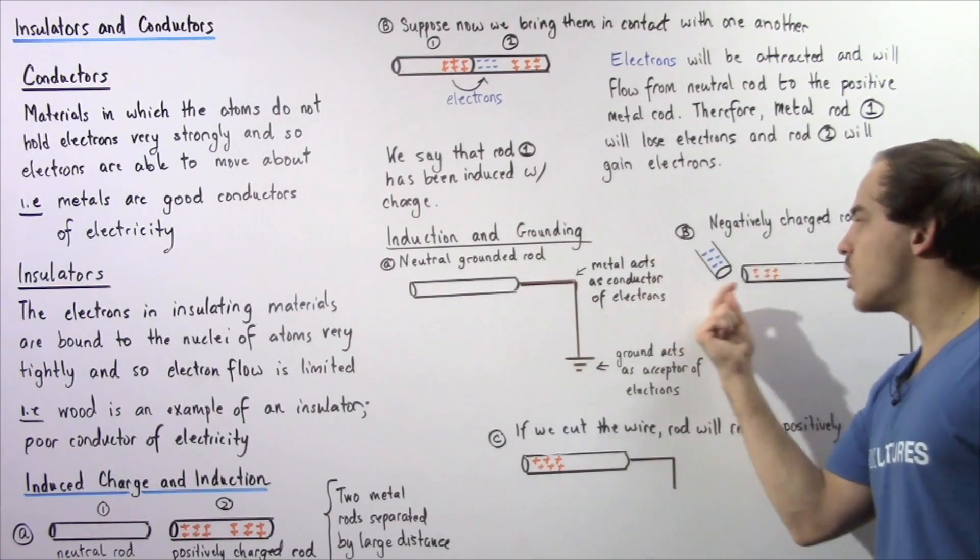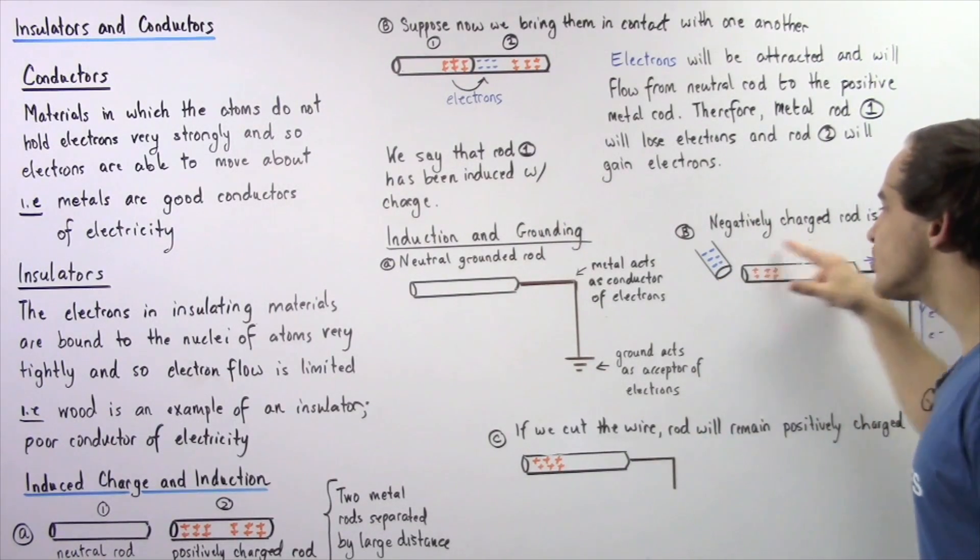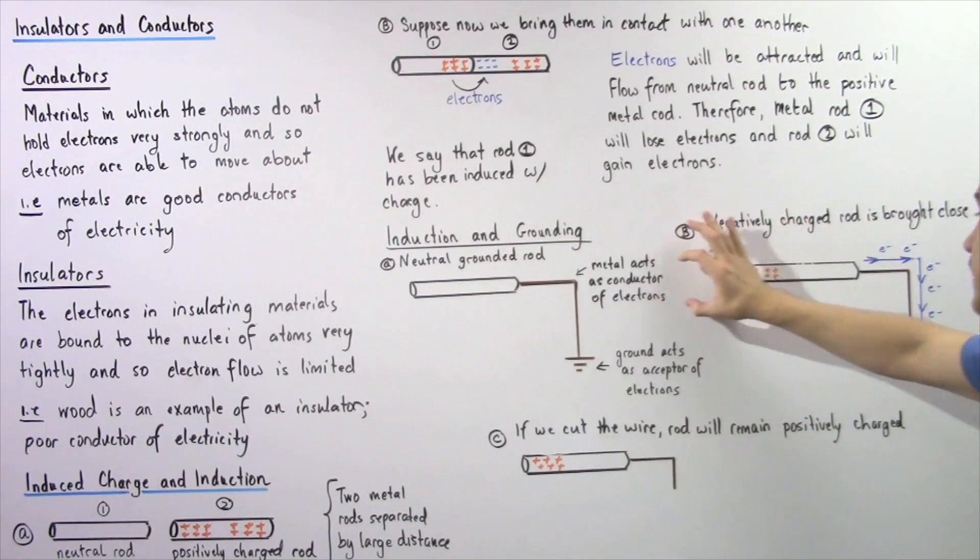Well, the electrons in this rod will repel the electrons in this rod, and electrons will be forced, will move in this direction, eventually leaving our rod and traveling inside the wire all the way to the ground.